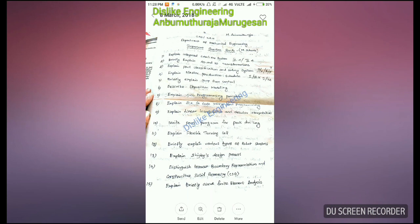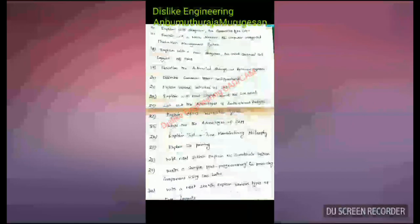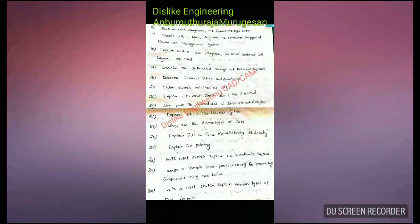Additional points on the advantages of Finite Element Analysis are covered from questions 5 to 6. The sixteenth question is: explain with a diagram the Generative Type Computer Aided Process Planning (CAPP). The seventeenth question covers a generative type production management system.